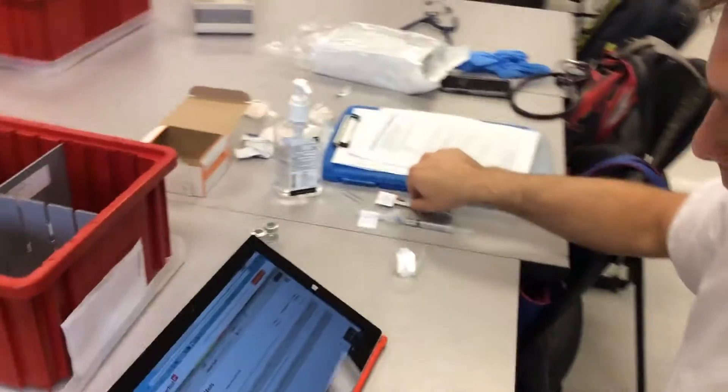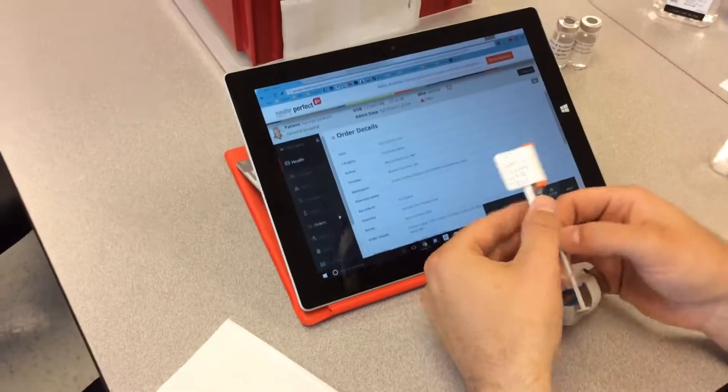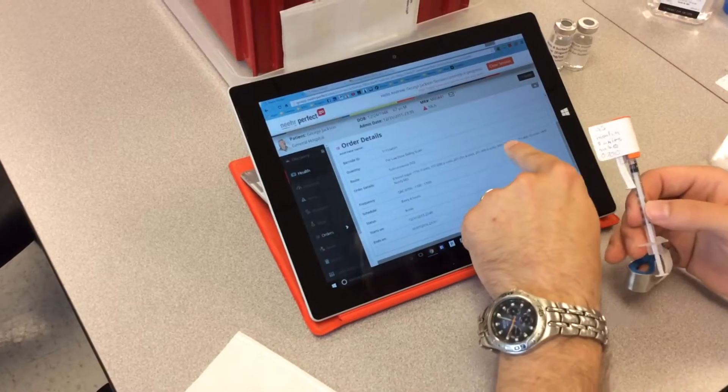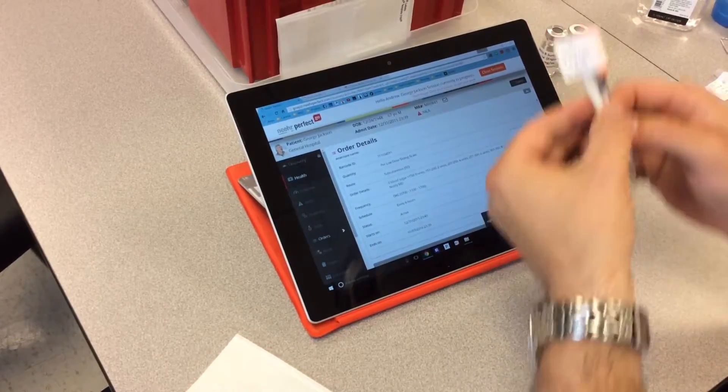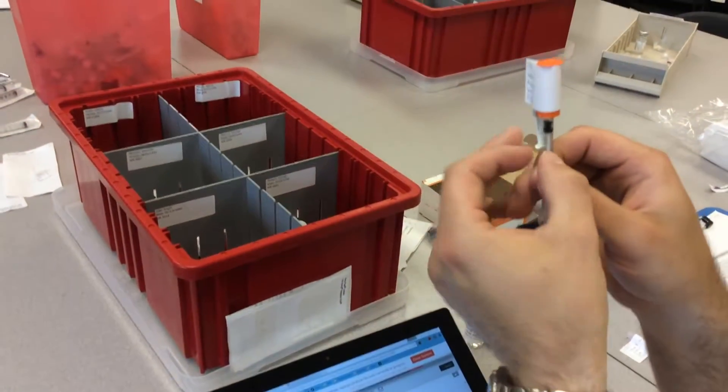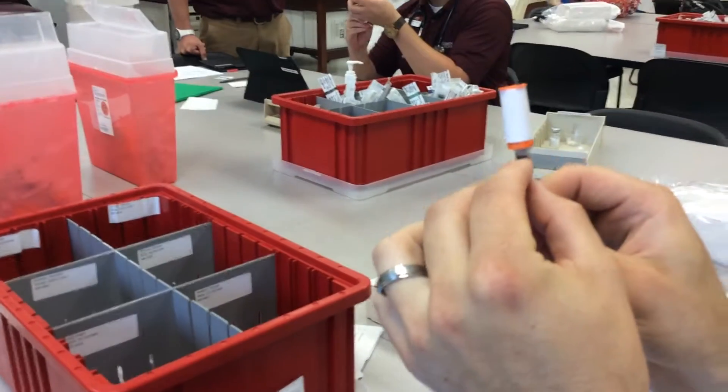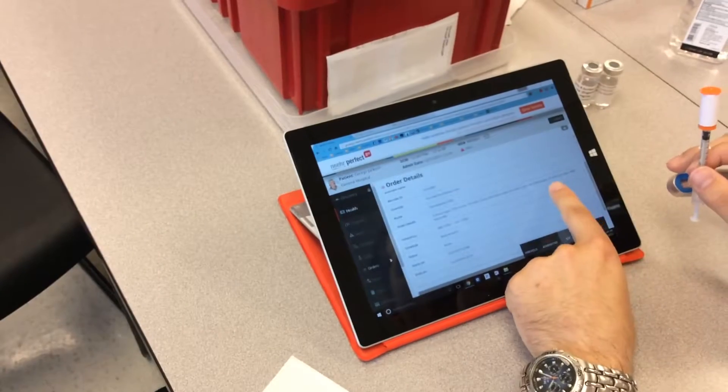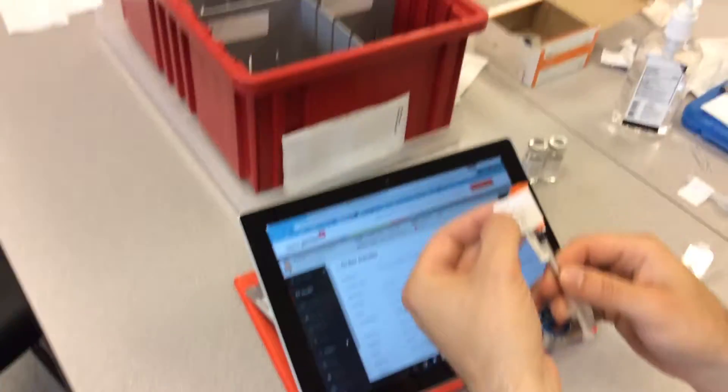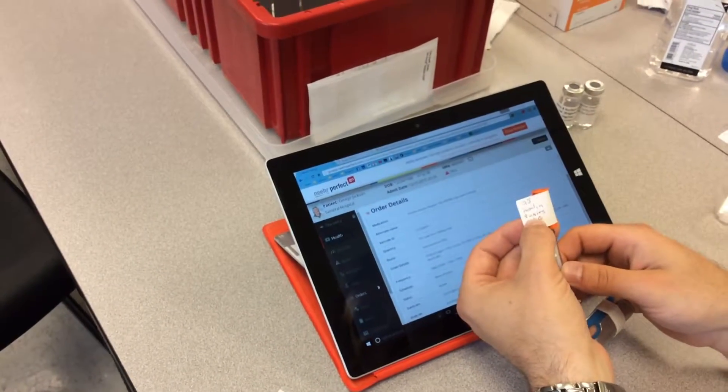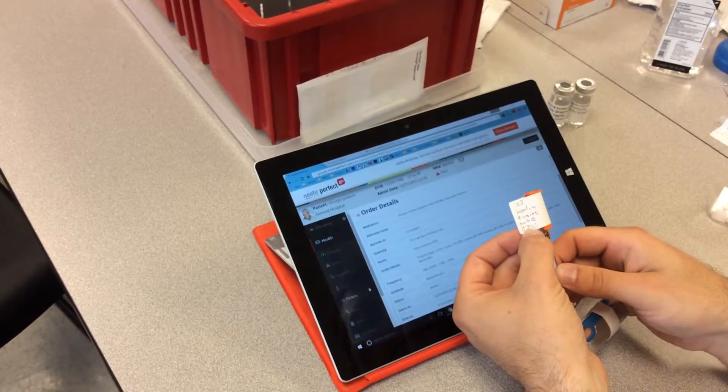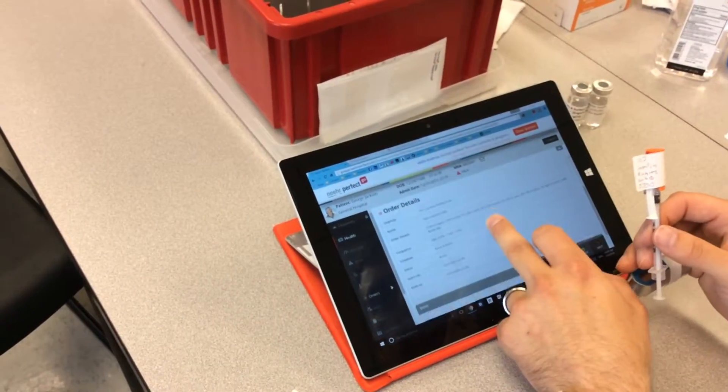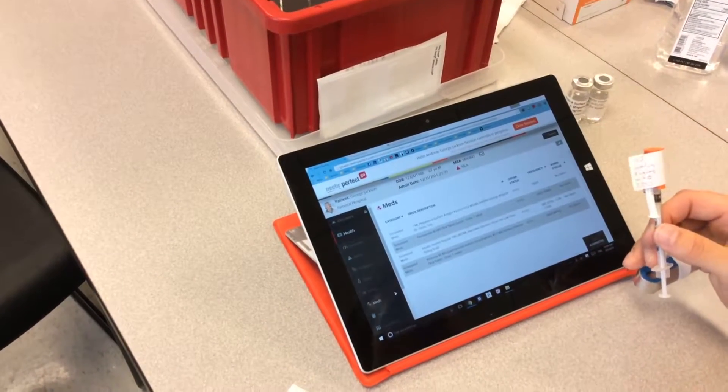Going over his insulin - because his blood glucose was 323, that puts him at eight units. That's what I drew out. I have eight units drawn. On the label it's for George Jackson, insulin, eight units, sub Q is the route, and 0700 is the time. That checks out with my MAR.